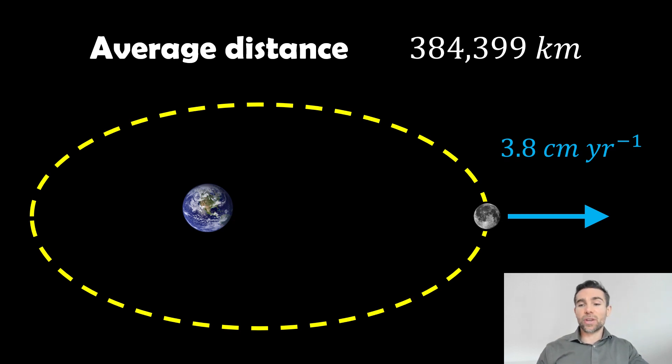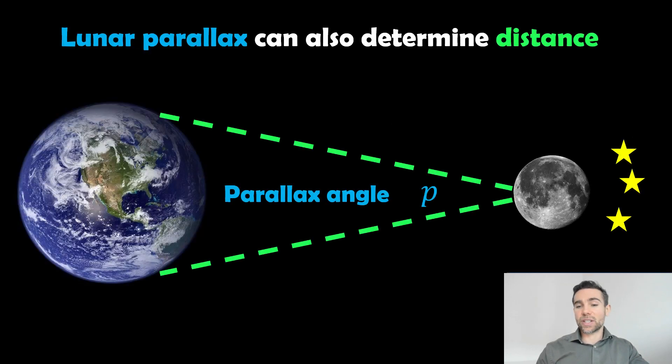It's moving away from the Earth on average about 3.8 centimeters per year. That's to do with interaction of the tides and the spin of Earth—that's a different video entirely. But the average distance right now is 384,399 kilometers. So we've got the distance there.